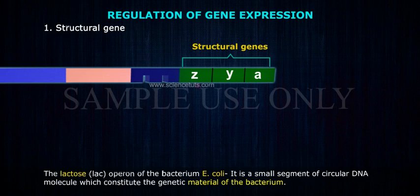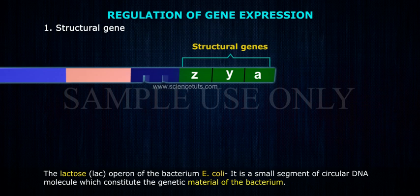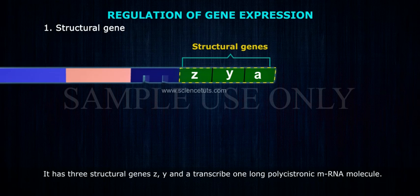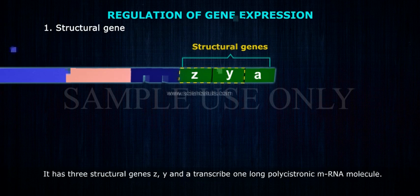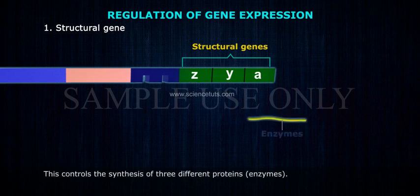The lac operon is a small segment of circular DNA molecule which constitutes the genetic material of the bacterium. It has three structural genes that transcribe one long polycistronic mRNA molecule. This controls the synthesis of three different proteins — enzymes.